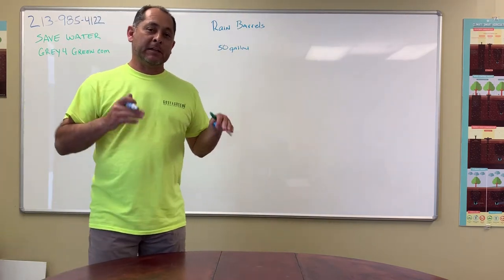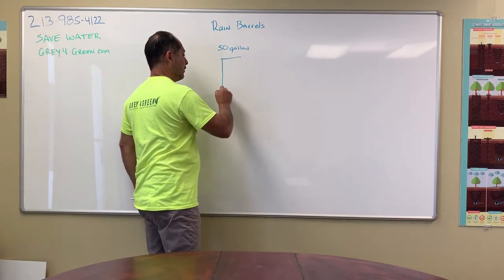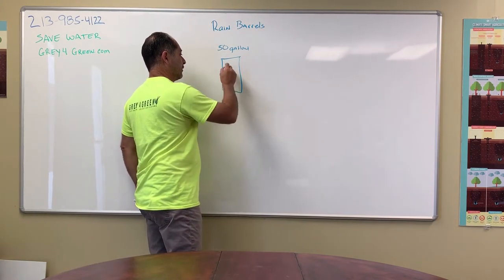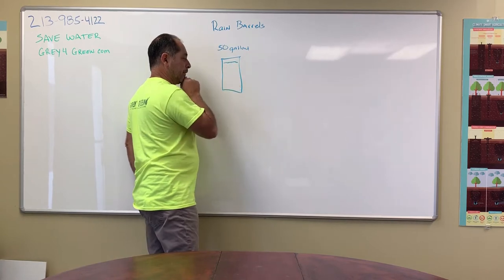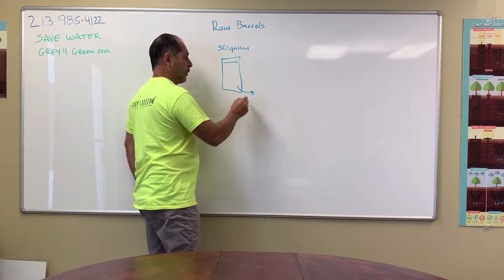And then once that 50 gallons goes away, it's gone. So you got that 50 gallons. That 50 gallons is going to go away pretty quick.